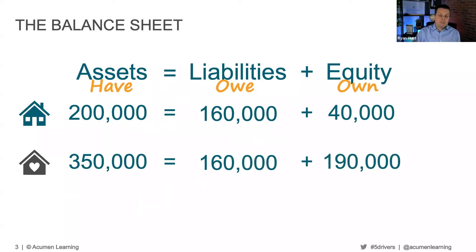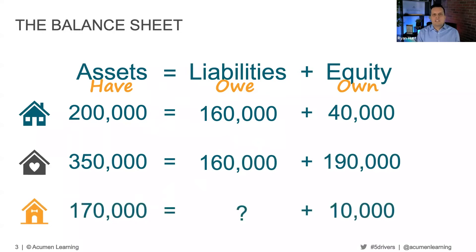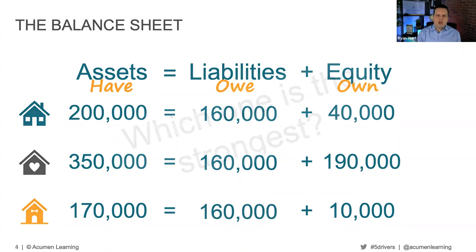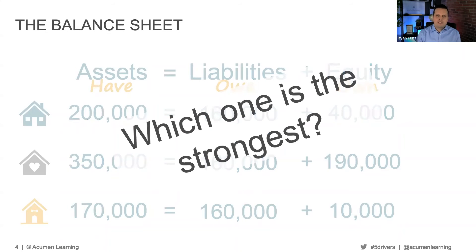One more example: another rental in our portfolio. It cost us $170,000, and somehow we only had to bring $10,000 to the bank, so we still have a $160,000 mortgage. Now here's my question — we have three rentals. Which one of these rentals is in the strongest financial position?